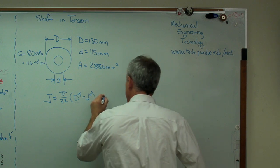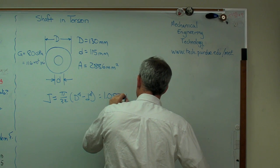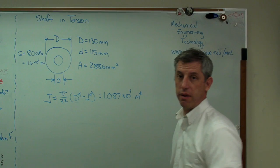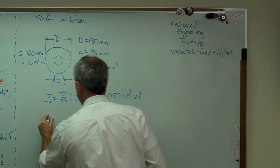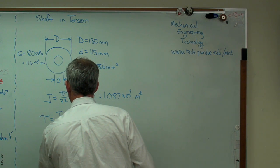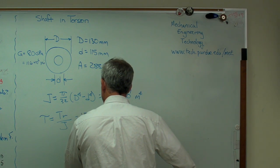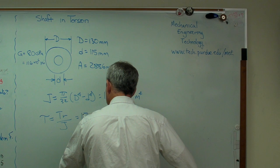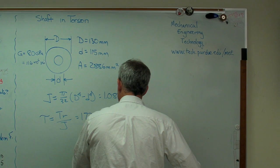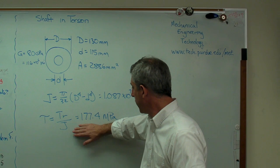And if we calculate that, you get 1.087 times 10 to the 7. So that's a lot bigger. That's a whole lot bigger. Now, let's see, again, this is tr over j. And if we calculate that out, tau turns out to be 177.4 megapascal. So now we're down into the reasonable range. This is actually reasonable.